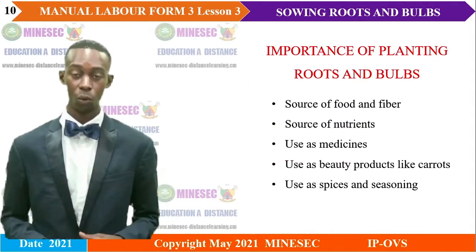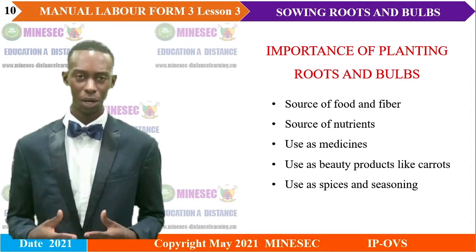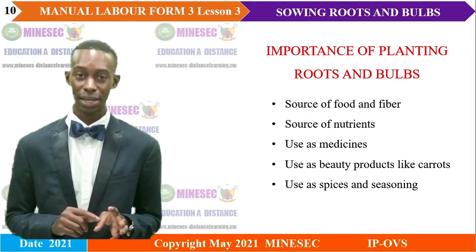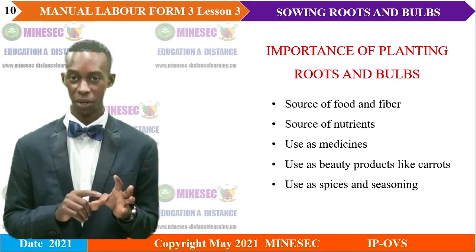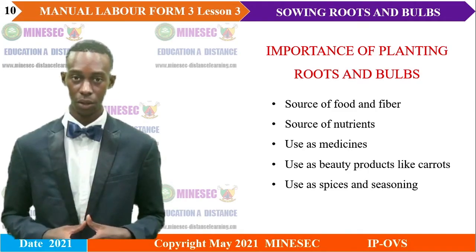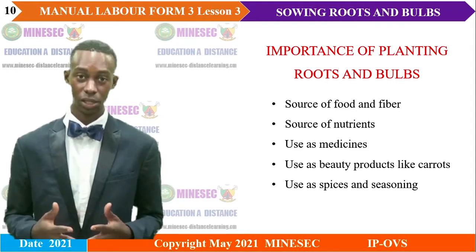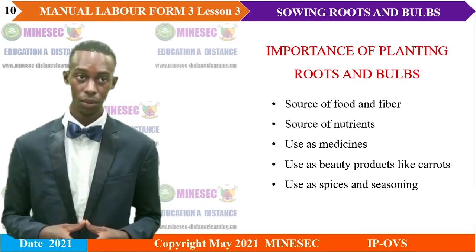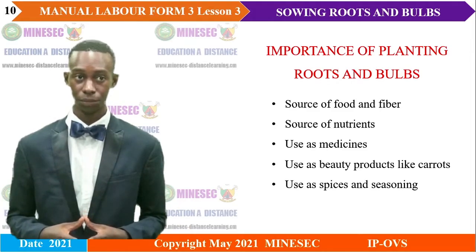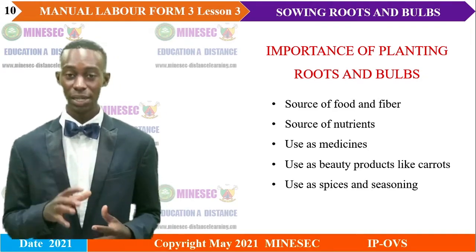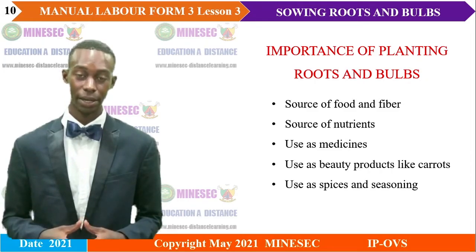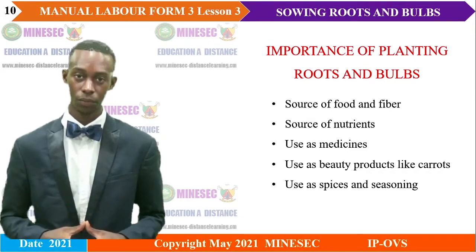Let's look at the importance of planting roots and bulbs. Firstly, roots and bulbs are a source of food and fiber — you have examples like carrots. They are also a source of nutrients, such as fibers. Roots and bulbs are also used as medicines — examples include onion, ginger, and garlic, which have medicinal virtues.